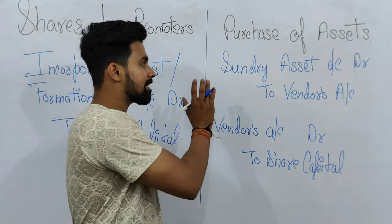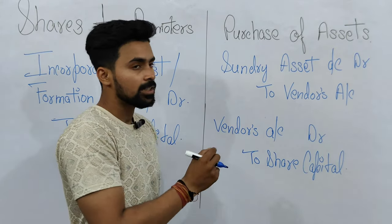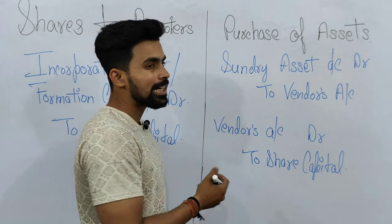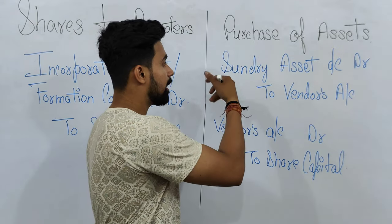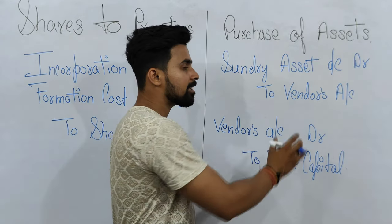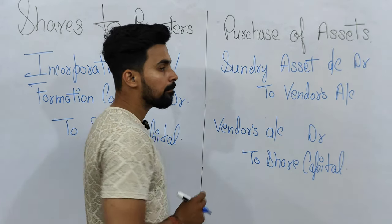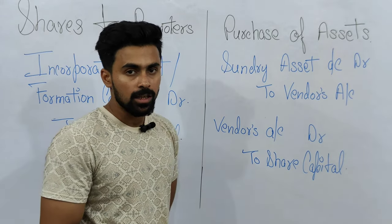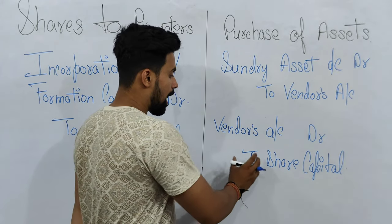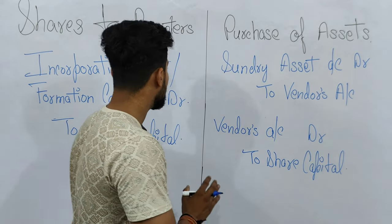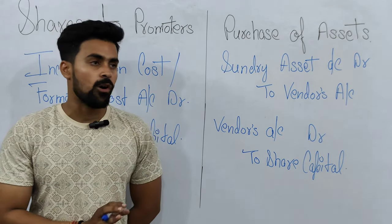Next comes the entry for purchase of assets. If a company has issued shares for purchasing assets, then the entry will be: Sundry Asset account debit to Vendor's account (because the asset is a real account — debit what comes in); then Vendor's account debit to Share Capital account (vendor is a personal account — debit the receiver; share capital is credited since the company is paying through shares).